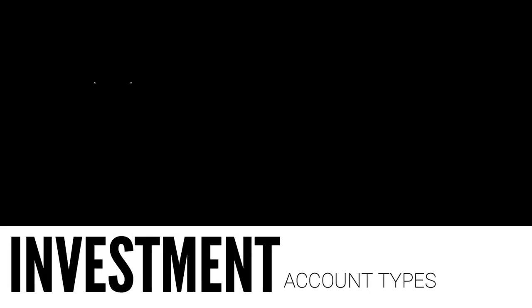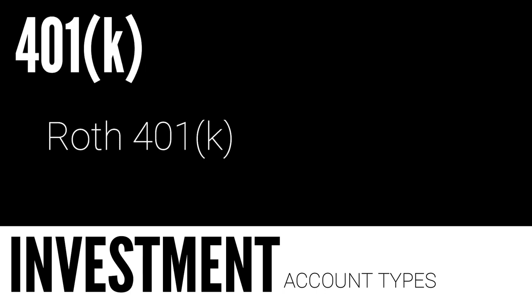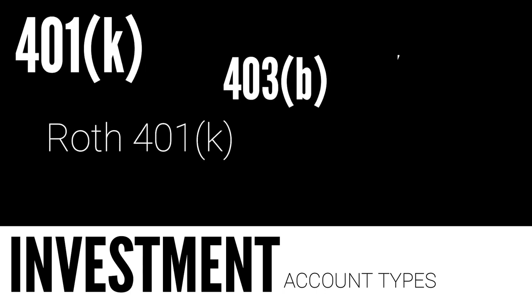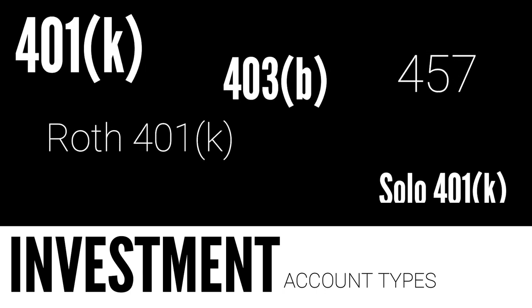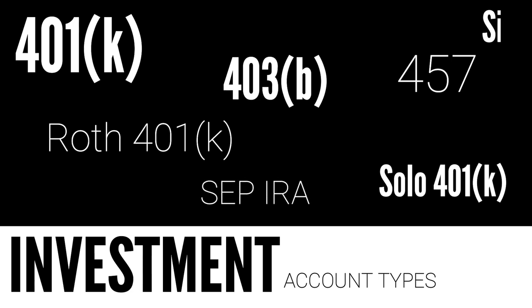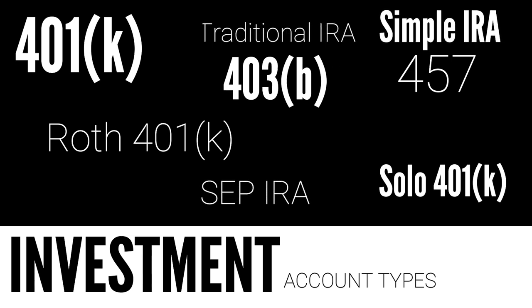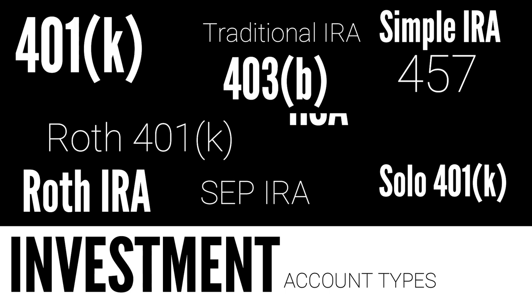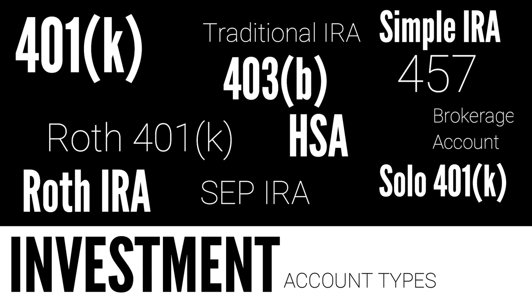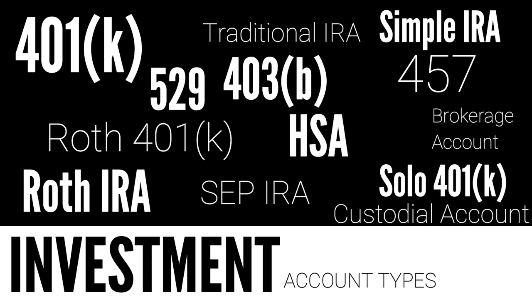Those accounts are either taxable accounts or tax deferred accounts. The types of accounts that people can invest in include 401ks, Roth 401k, 403bs, 457s, solo 401ks, SEP IRAs, simple IRAs, traditional IRAs, Roth IRAs, health savings accounts, brokerage accounts, 529 and custodial accounts. So those are just the main accounts — there are over 10 of them. So how do you go about deciding how to prioritize putting your money in those accounts?